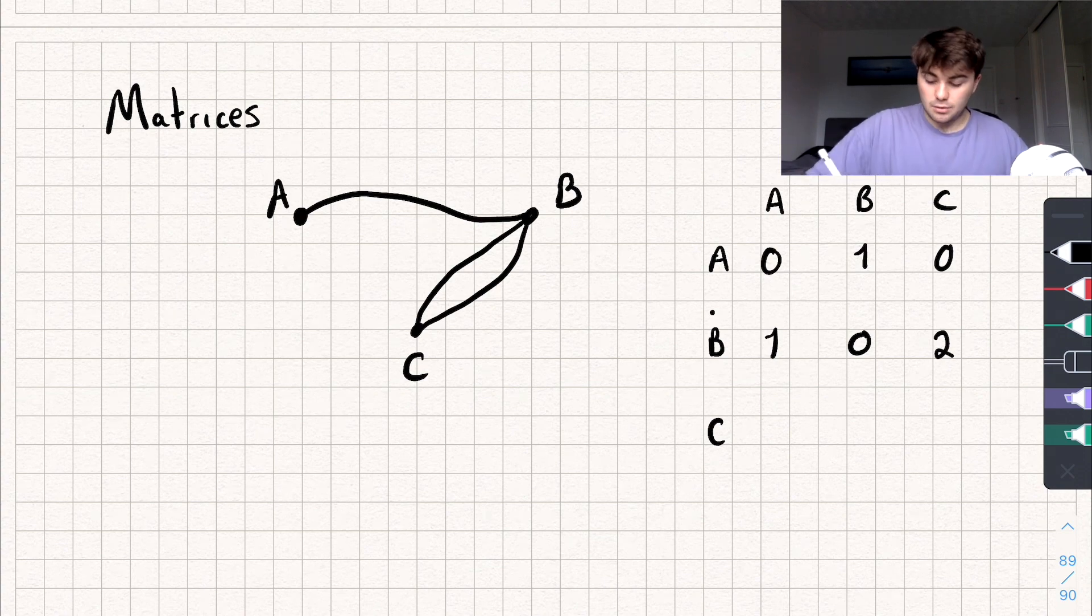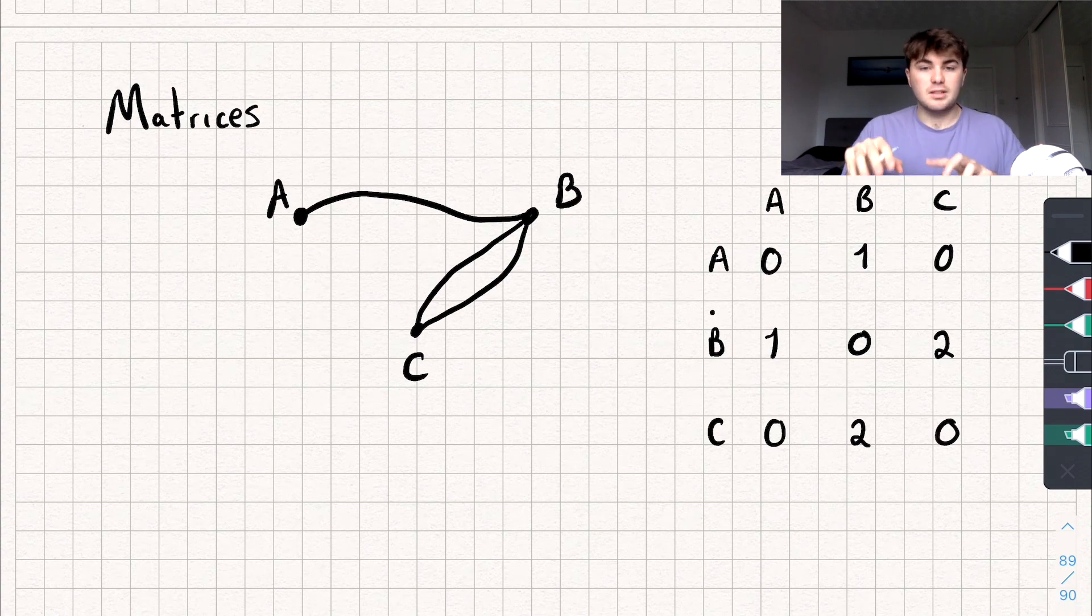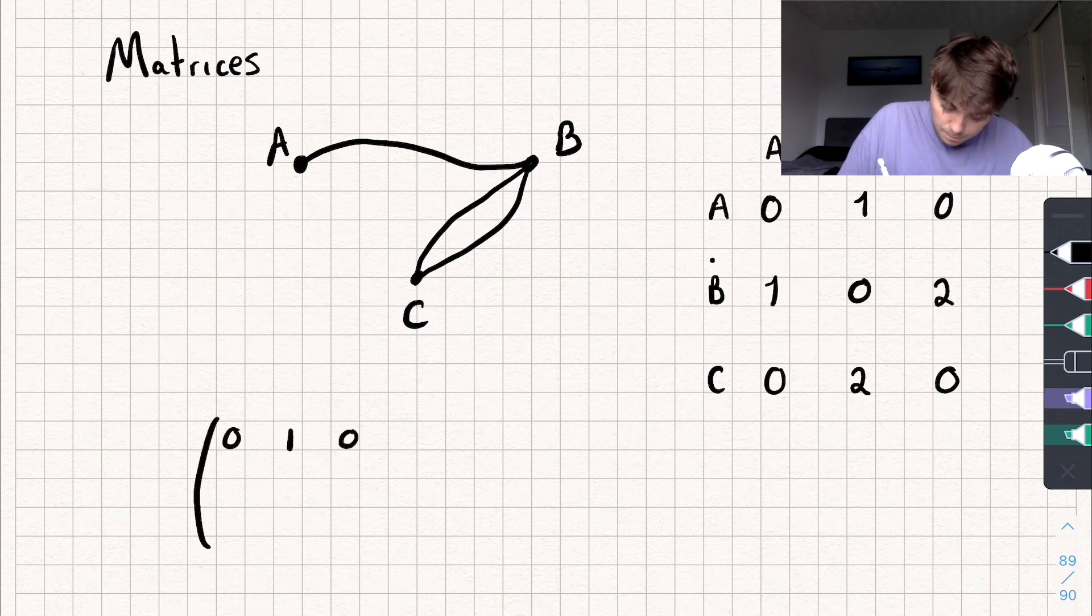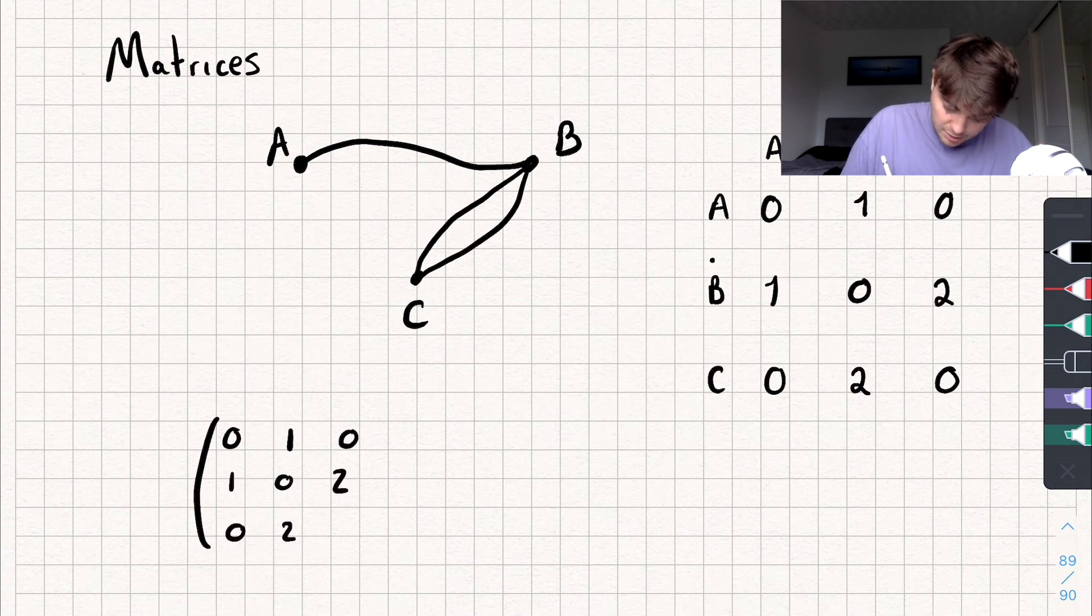Now let's do the same for C, so C will be, well, zero, two, and zero. So there you go, we've filled in this table. But we could represent this as a matrix. So let me write a matrix, and we do that with big brackets like this. So it would be zero, one, zero, one, zero, two, and zero, two, zero.